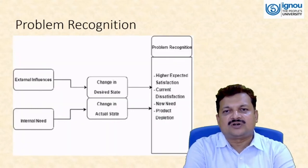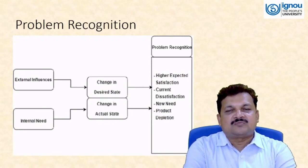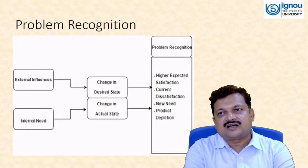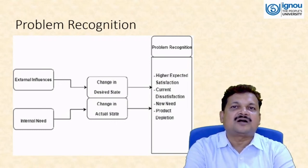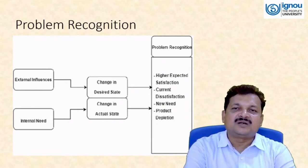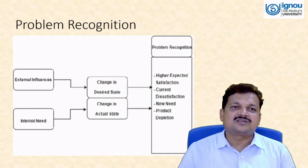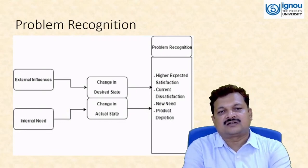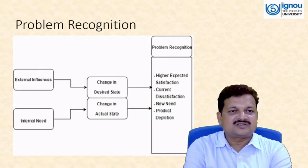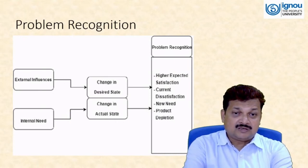External stimuli influences internal need. There is a constant bombardment of information from different sources — advertisements through electronic media and print media like magazines and newspapers, as well as physical exposure to products, prices, and availability. External stimuli always creates a desired state, while internal need represents the actual state — what you require.